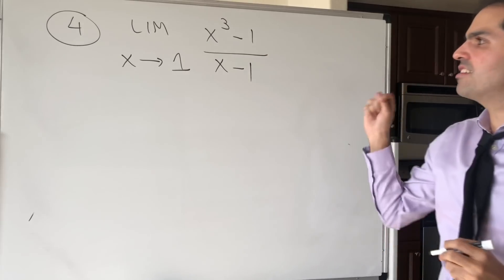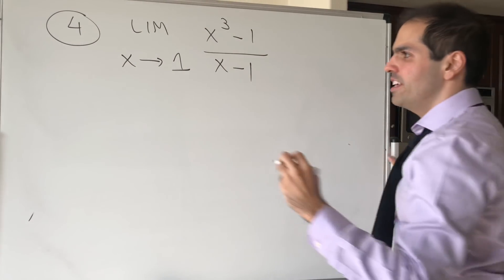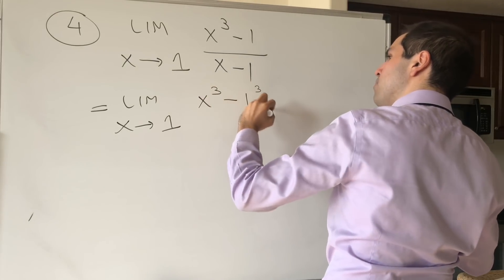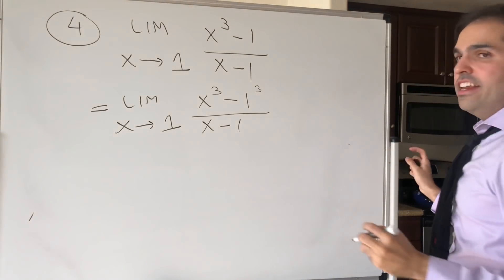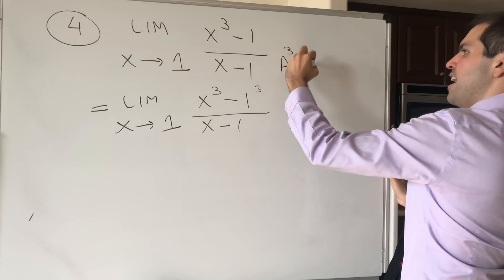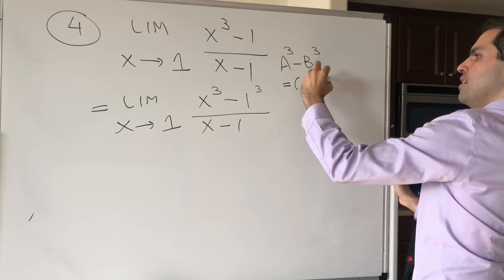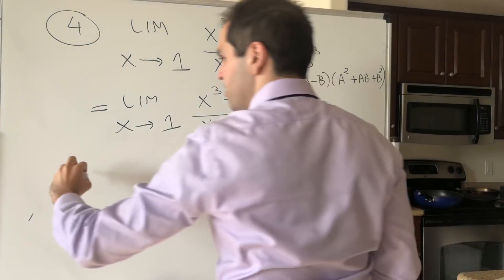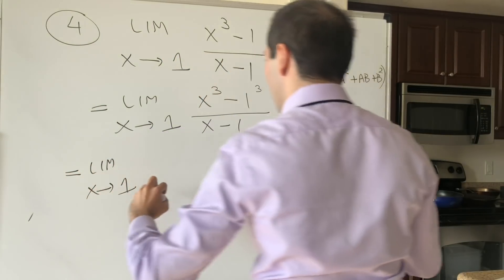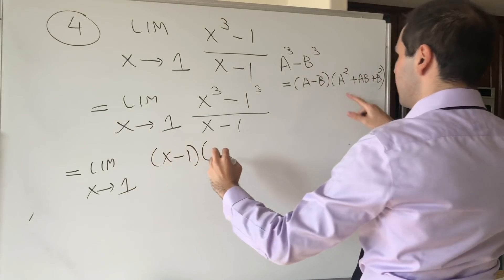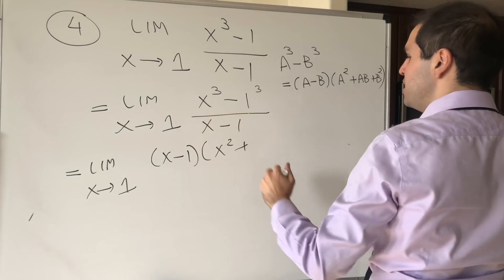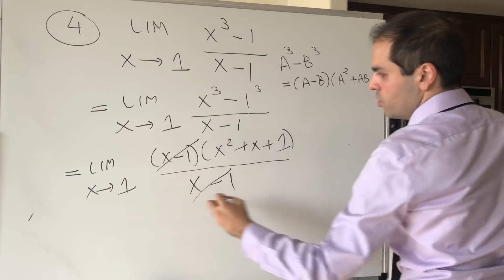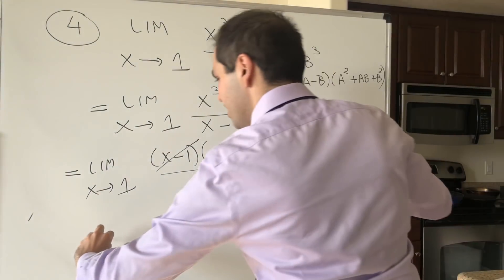Next: limit x→1 of (x³ − 1)/(x − 1). This is a tricky factoring problem. We write x³ − 1³, and use the difference of cubes formula: a³ − b³ = (a − b)(a² + ab + b²). So the numerator becomes (x − 1)(x² + x + 1), and the (x − 1) cancels with the denominator, leaving x² + x + 1 evaluated at x = 1, which is 1 + 1 + 1 = 3.